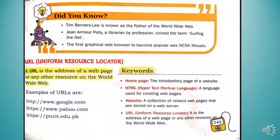Next is URL — Uniform Resource Locator. A URL is the address of a web page or any other resource on the World Wide Web. Here are some examples of URLs: www.google.com is the proper address of the Google website. Whenever you access Google, you have to use this address. Similarly, you can access Yahoo using its address.